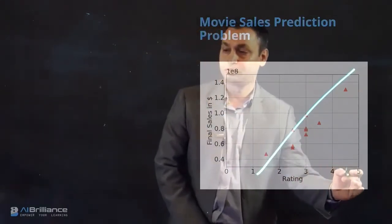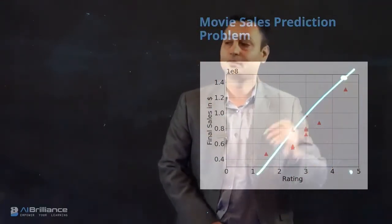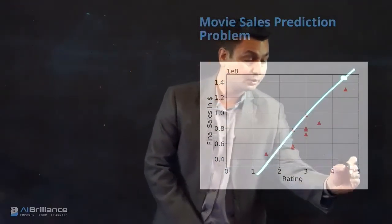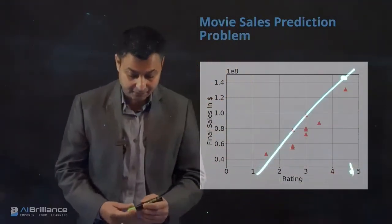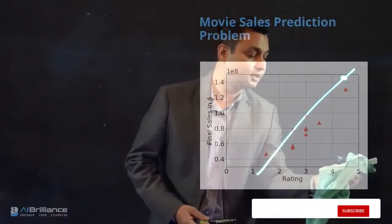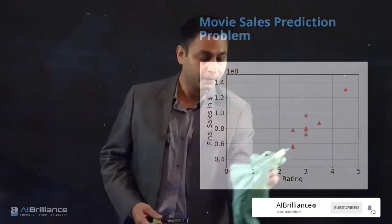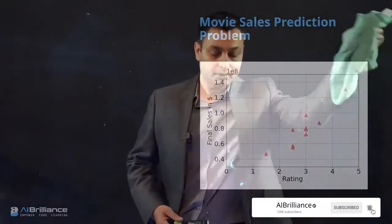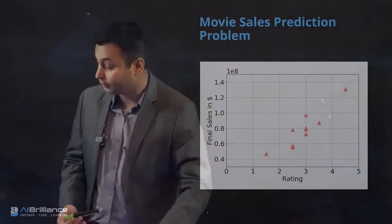Once fitted, given a rating for a new movie, you should be able to predict the final movie sales. But this is just a simple single unit where only one feature and one output exist.